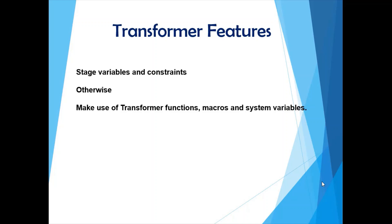That is not to say you would never use a transformer stage — any transformation job would at a minimum have at least a single transformer. When using a transformer, there are best practices to follow. For stage variables: any calculation needed repeatedly for output columns — say there's a calculation needed for two output columns — instead of doing it in column derivations, prefer doing it in a stage variable. That way you perform the transformation once and use the stage variable's output value in the column derivation, reducing repeated processing and saving job processing time.